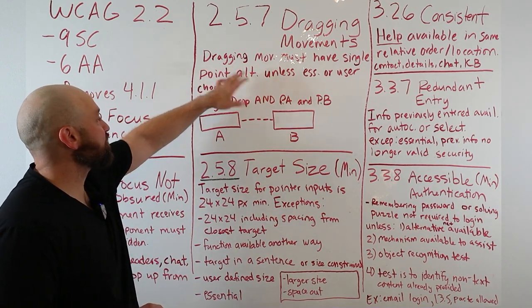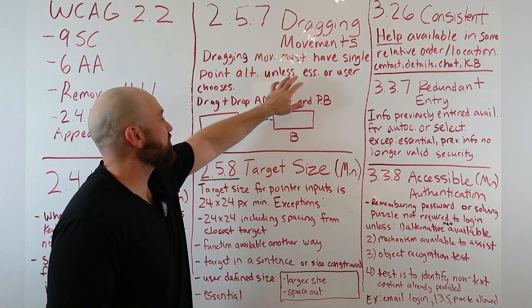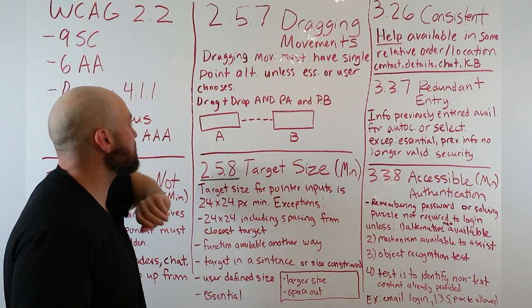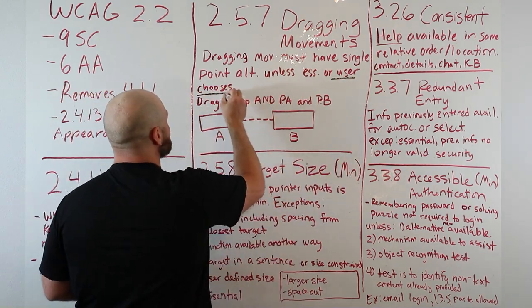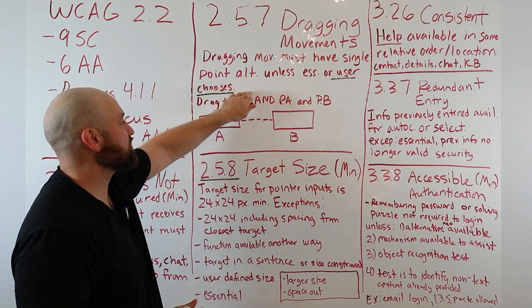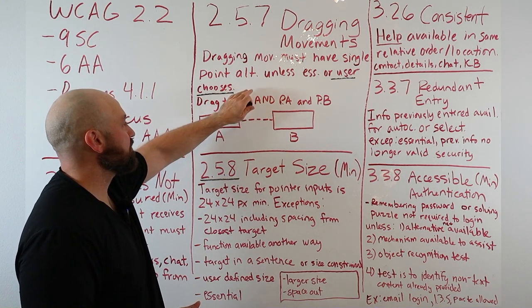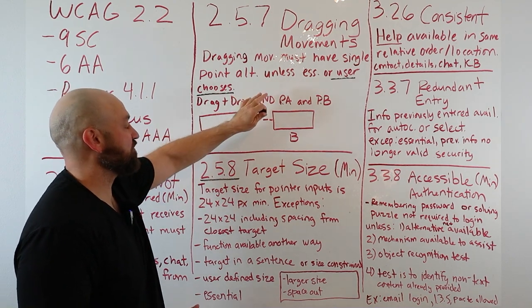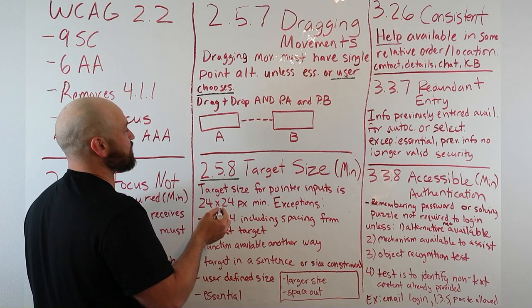Moving on to 2.5.7 Dragging Movements. The requirement here is that a dragging movement must have a single point alternative unless that movement is essential or the user chooses that dragging movement. Just keep in mind with user choice, that's usually going to be okay. If a user decides to choose something, that's okay because we've put the user in control.